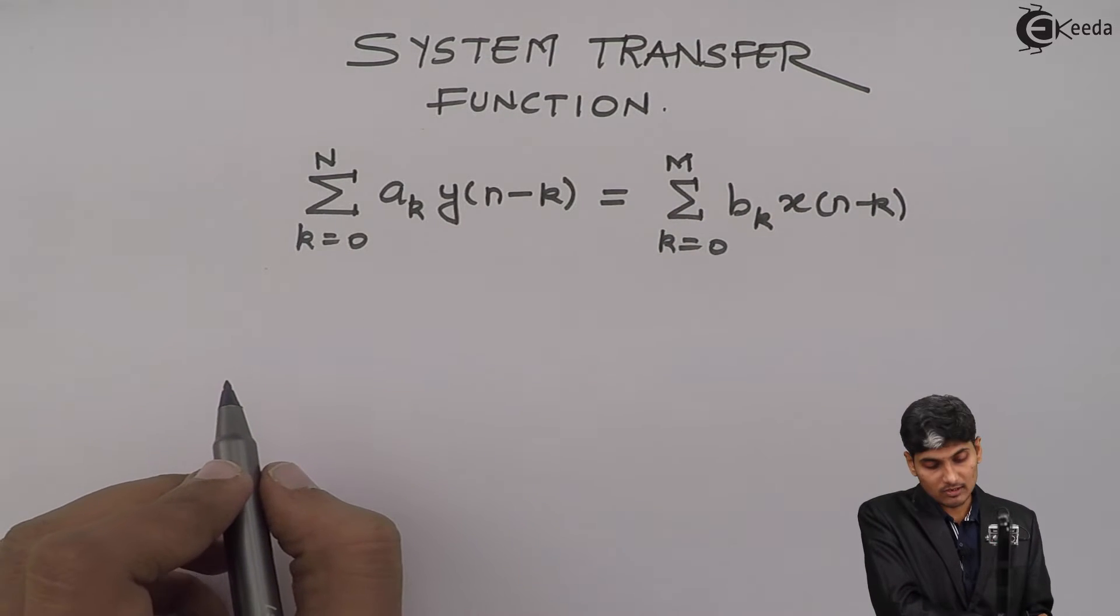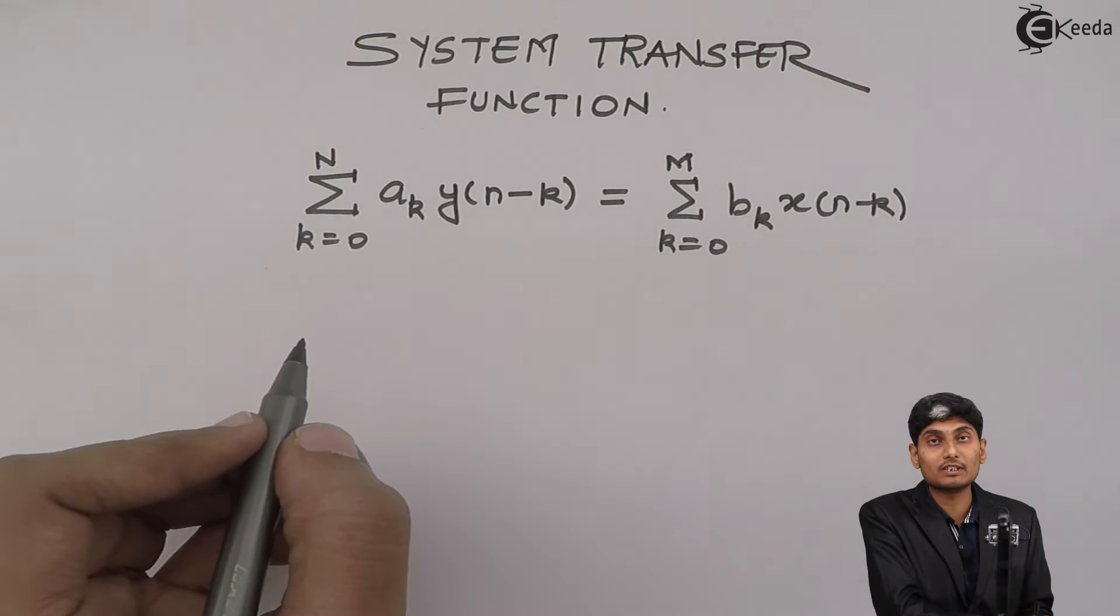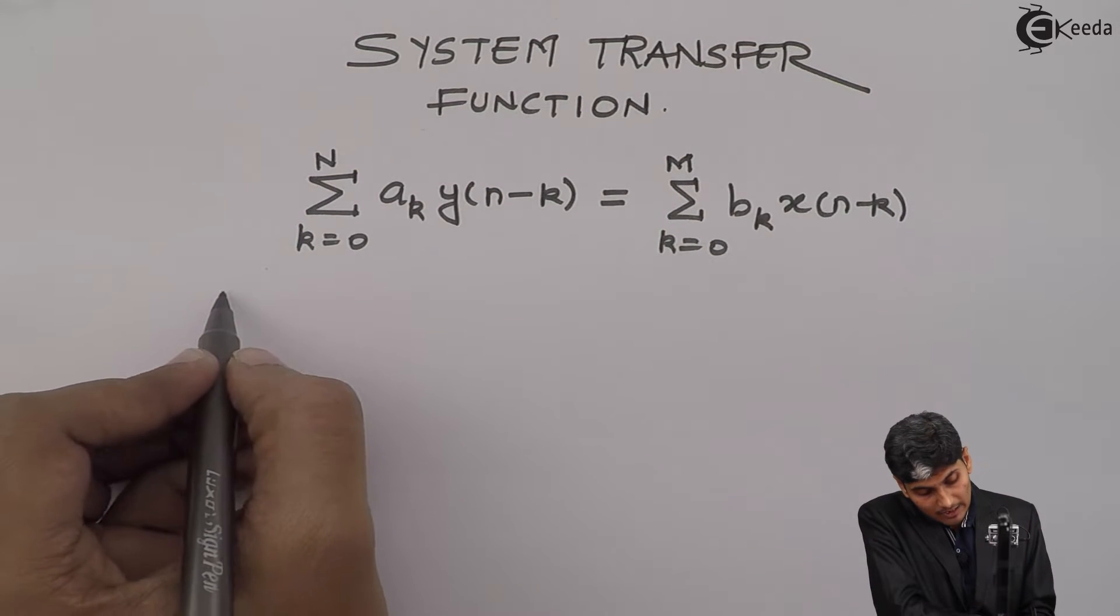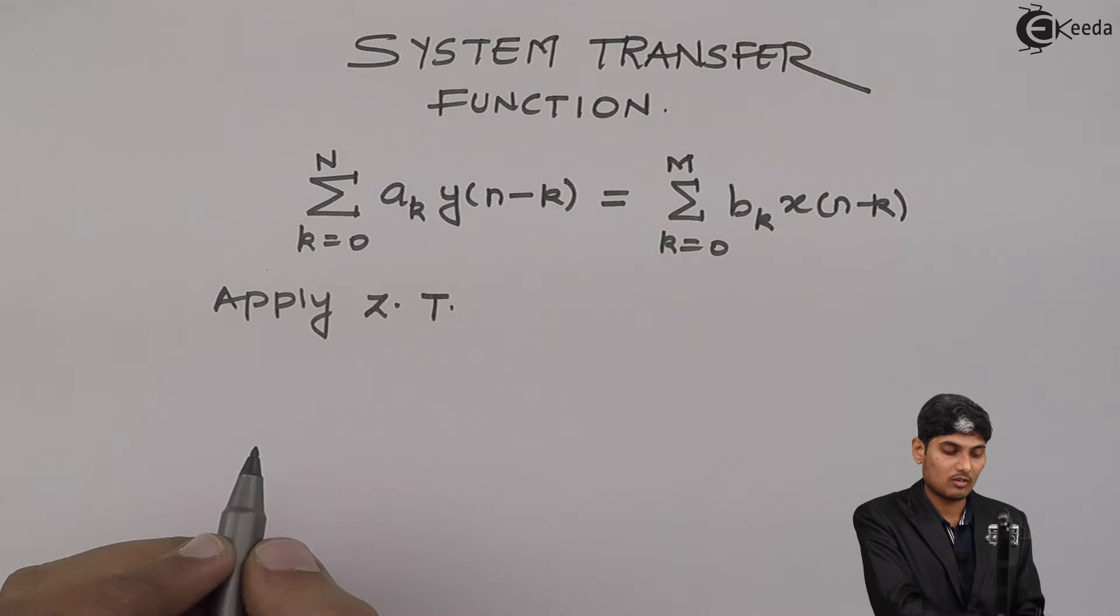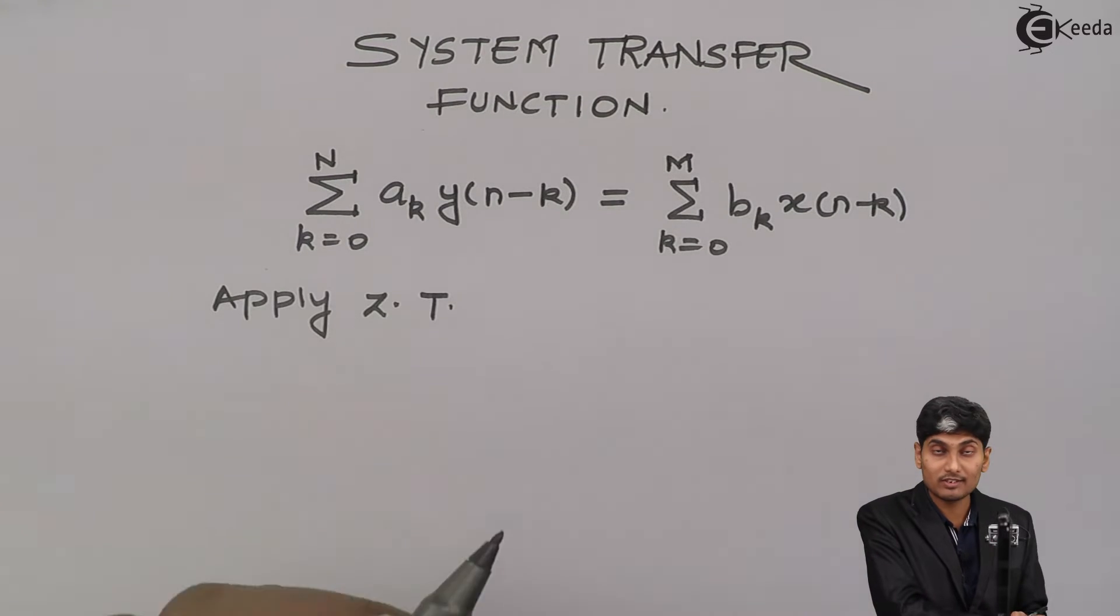Now, to get the system transfer function out of this difference equation, we apply z transforms. I will be applying z transform on this equation.